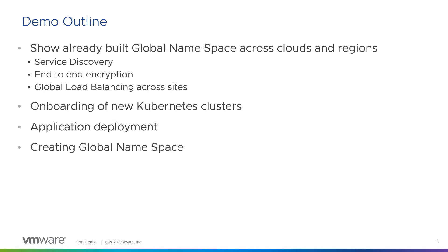In the second part of the demo, we will show you how we onboard new Kubernetes clusters into the service. We will deploy an application across two clusters, and then we'll create a global namespace that will establish service discovery and encryption across all the services of our application.